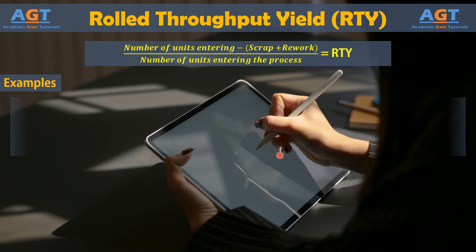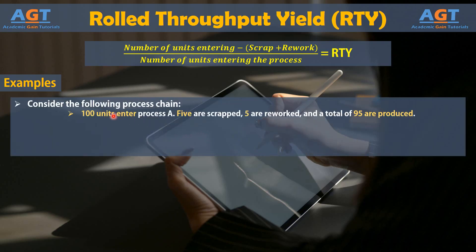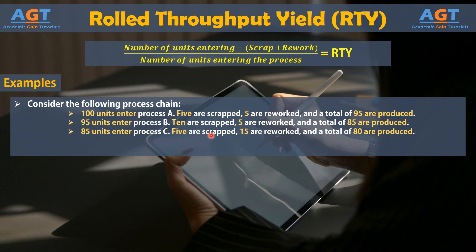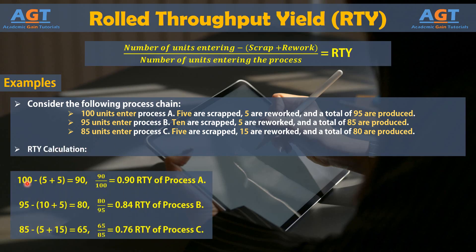Consider the following process chain. The rolled throughput yield is calculated as follows. The number of units entering is 100, minus 5 scraps plus 5 reworks, equals 90. Now 90 divided by 100 equals 0.9, which is the rolled throughput yield for A.